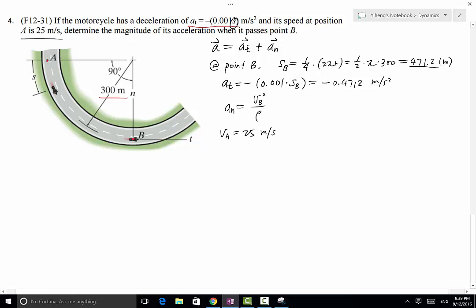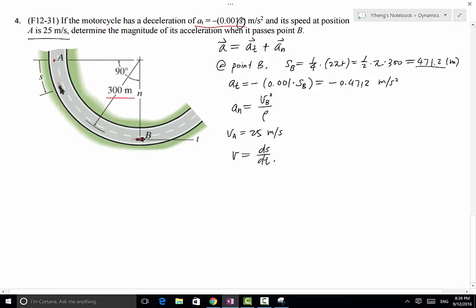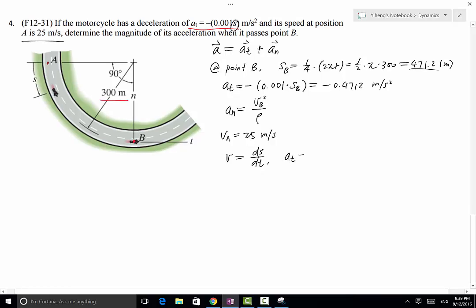Therefore, we need to apply one of the three kinematic equations along the path. Again, along the path, we have v equals ds/dt. And then a_t equals dv/dt. And lastly, a_t ds equals v dv.